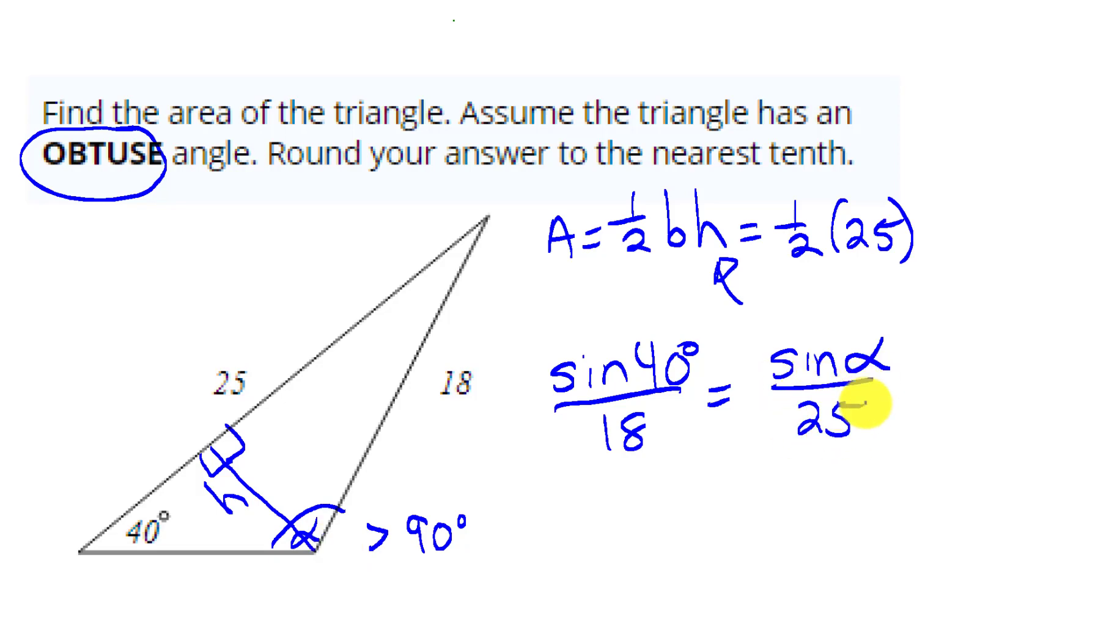Now remember, when we use our calculator to do inverse sine, it is only going to give us answers on the right half of the circle. Since it's positive, it's going to give us an answer somewhere here in quadrant 1. That is not going to be an obtuse angle.